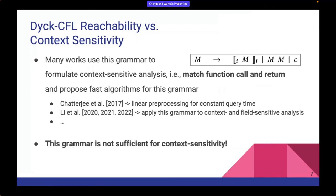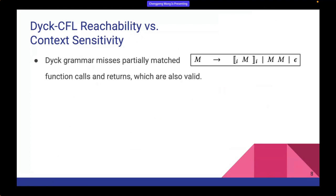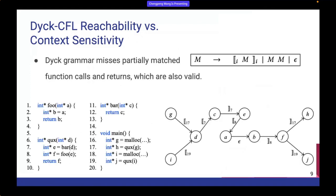However, this grammar alone is not sufficient for context-sensitive analysis, because it strictly requires that every open parenthesis must have a corresponding matched closing one. In the context of program analysis, this means it misses many partially matched function calls and returns. This graph represents the value flow of our motivating example program, where every vertex represents a value and edges represent assignment or data dependence. There are edge labels recording the program locations of each function call and return.